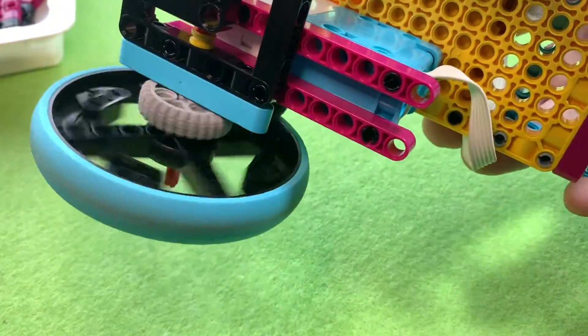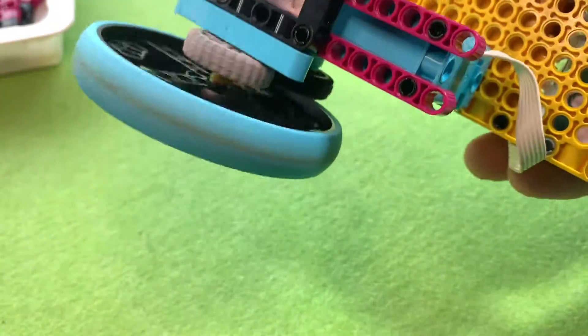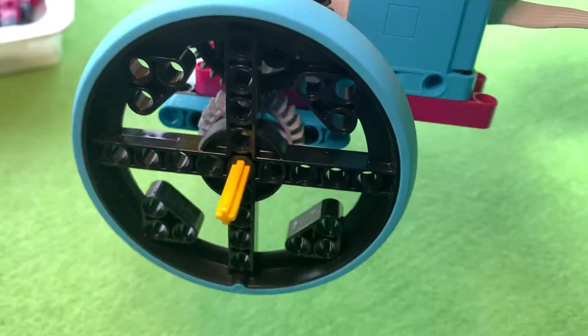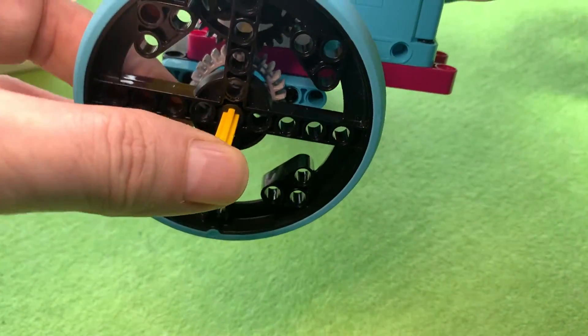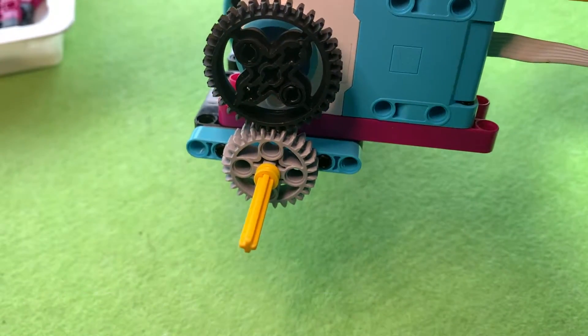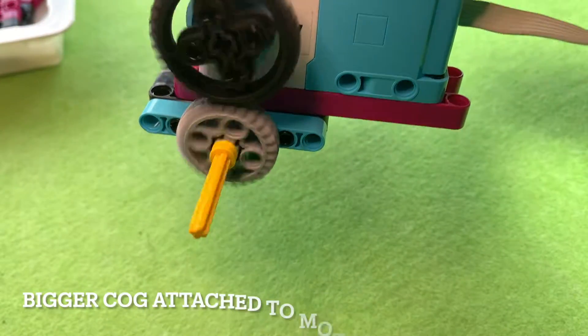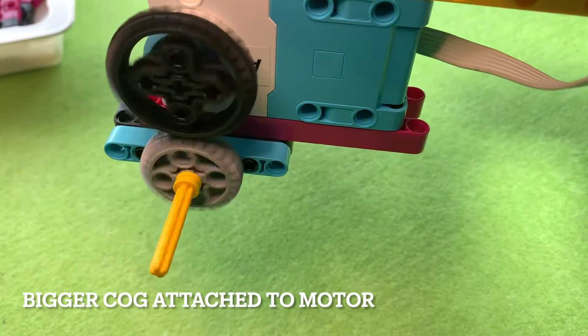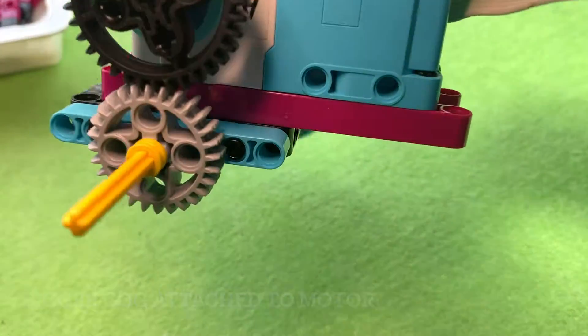Sometimes you want your wheels to spin a little faster, and the best way to do that is to use different sized cogs. If you want the wheels to spin fast, then you need to use a small cog which actually turns the wheel but a larger cog attached to the motor.